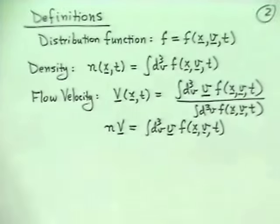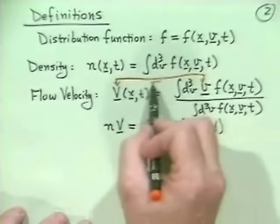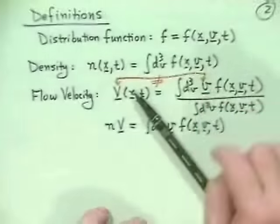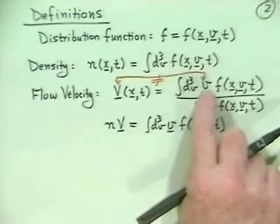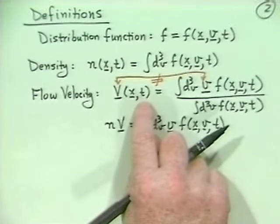This is an important notational and physical distinction: capital V is the total macroscopic flow velocity of the whole fluid, while little v is the velocity of each individual particle within the distribution. When we speak of little v, we're talking about a single particle. When we speak of capital V, we're talking about the average velocity of the whole distribution. Previously we dealt with individual particle motion; now in the fluid description, we talk about the average flow velocity.